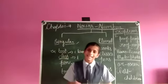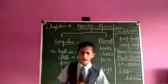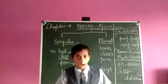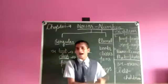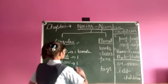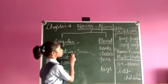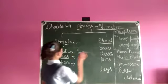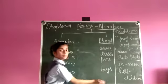Now let's learn about plural number. If a noun refers to more than one person or thing, it is called plural number. For example, book becomes books, class becomes classes. This is singular number and this is plural number.